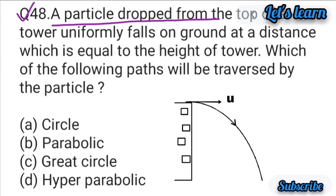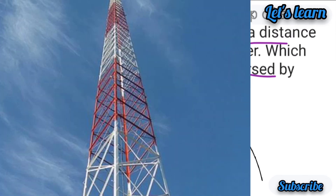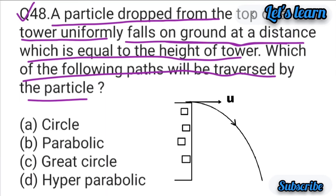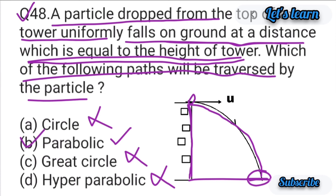Question number 48: A particle is dropped from the top of a tower and falls uniformly on the ground at a distance equal to the height of the tower. Which path will be traversed by the particle? The particle follows a parabolic path to the ground. Not a circle, not a straight line, not a hyperbola — the correct answer is a parabolic path. Option B is correct.